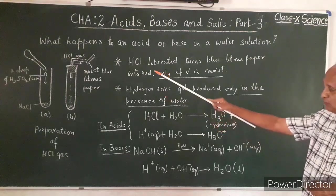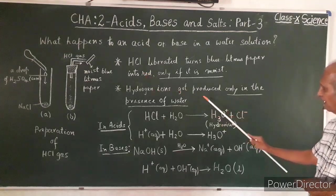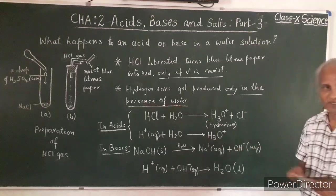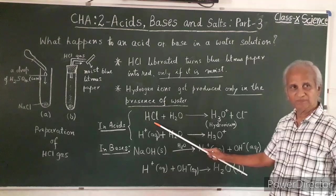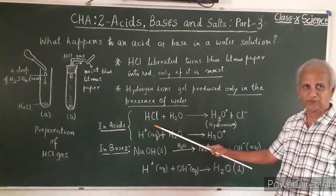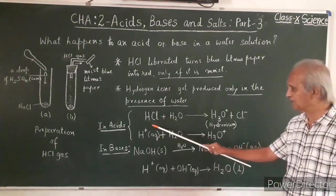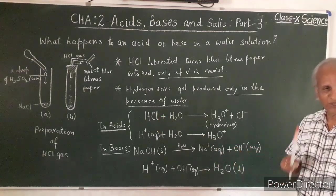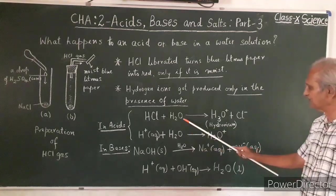Hydrogen ions in HCl gas get separated, get produced only in the presence of water. HCl, hydrogen chloride, same as hydrochloric acid. If we are very specific, we write HCl in bracket G for gaseous state plus H2O.